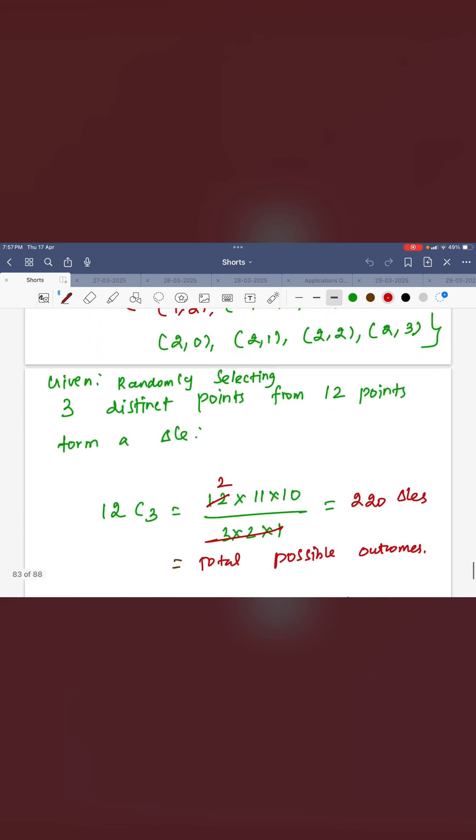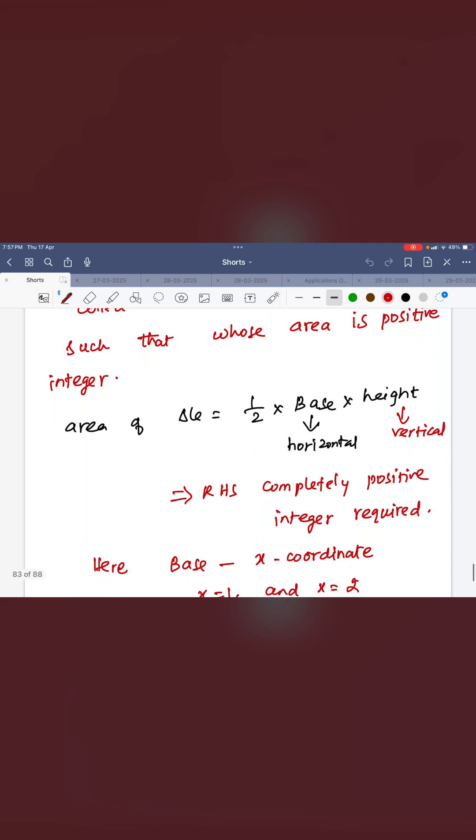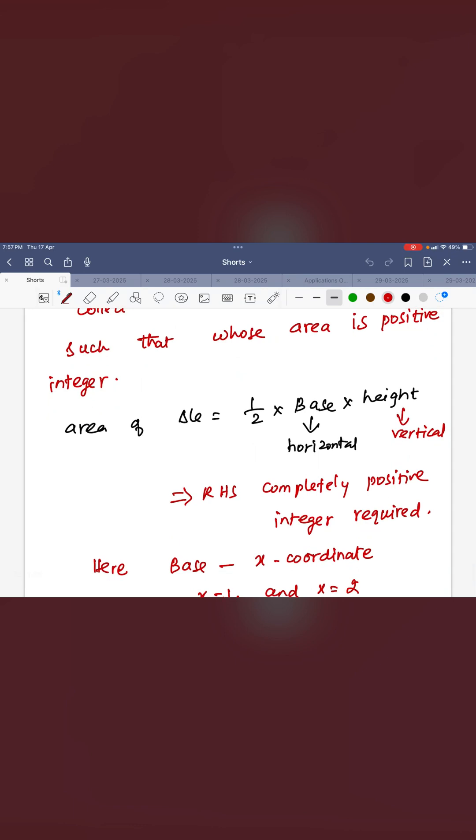Now you can see how many triangles are possible. You have to pick three elements. So 12 C 3, 220 triangles. Out of that, we need only the positive integer area.